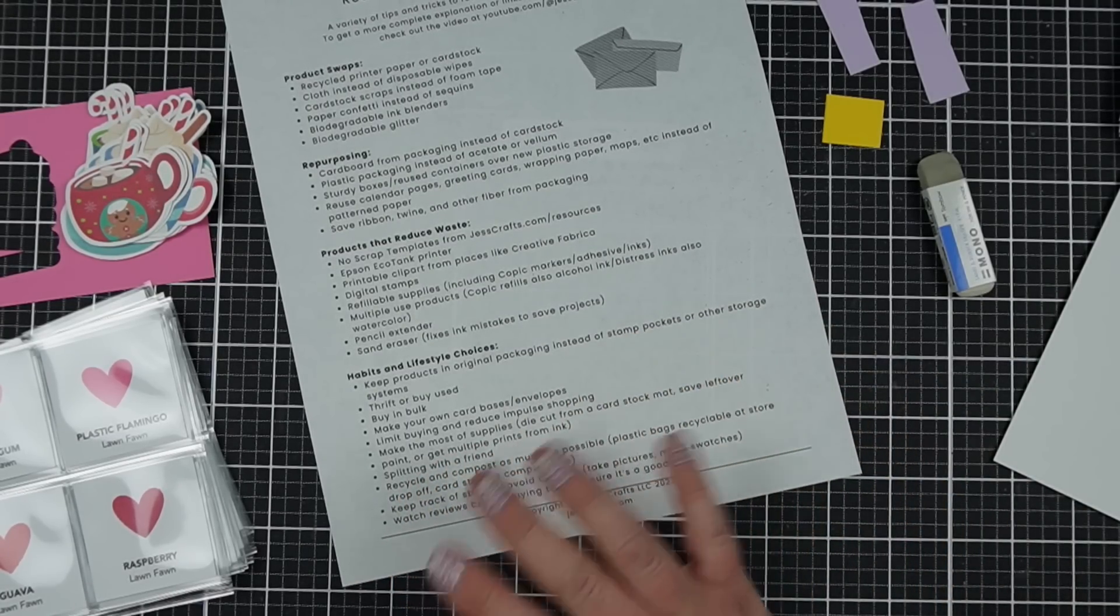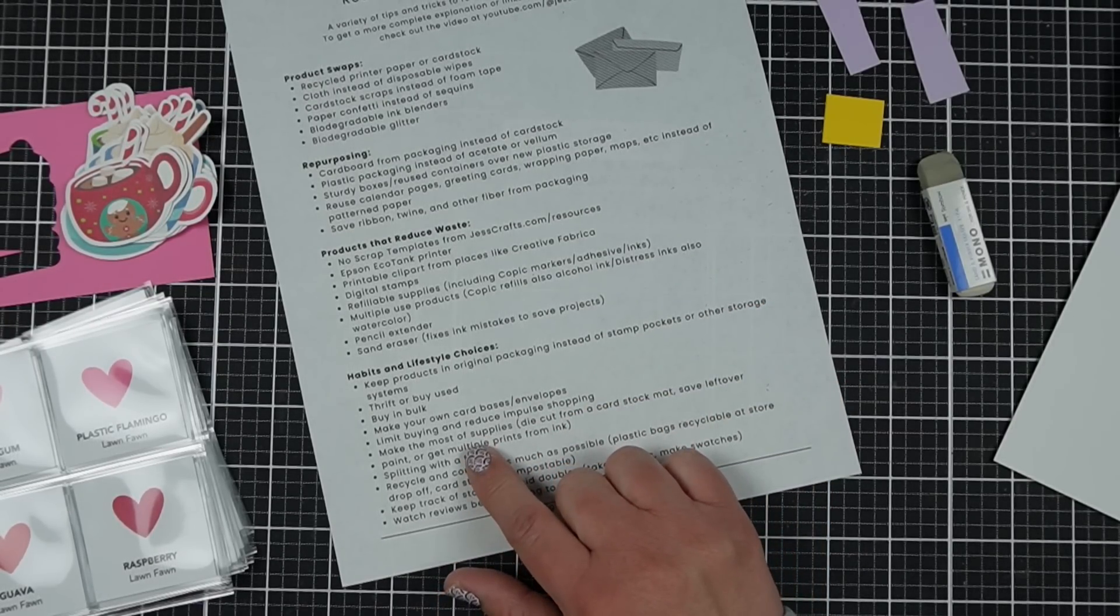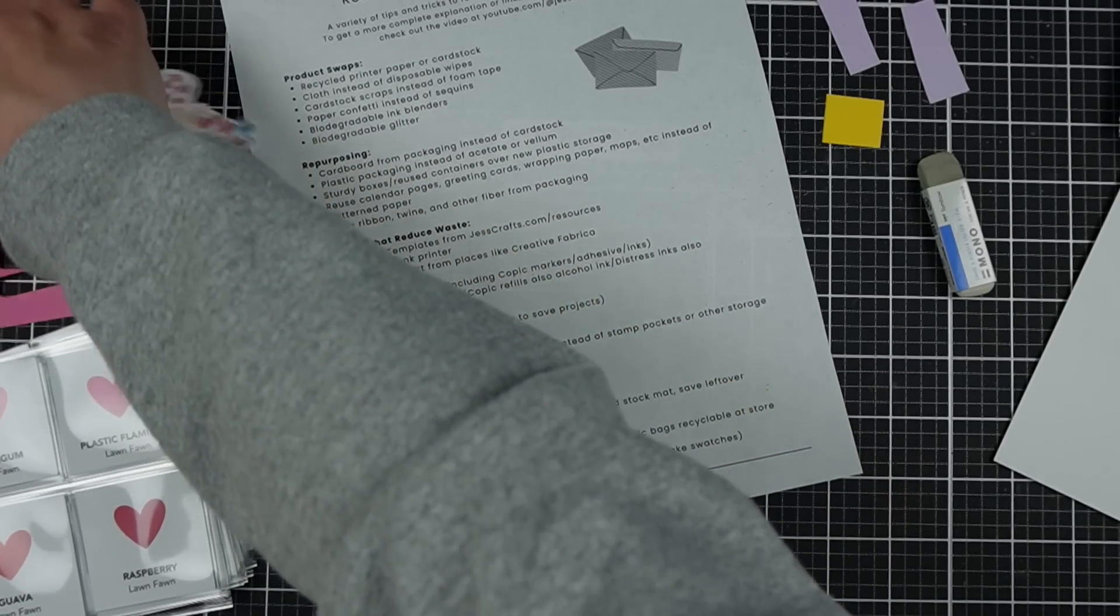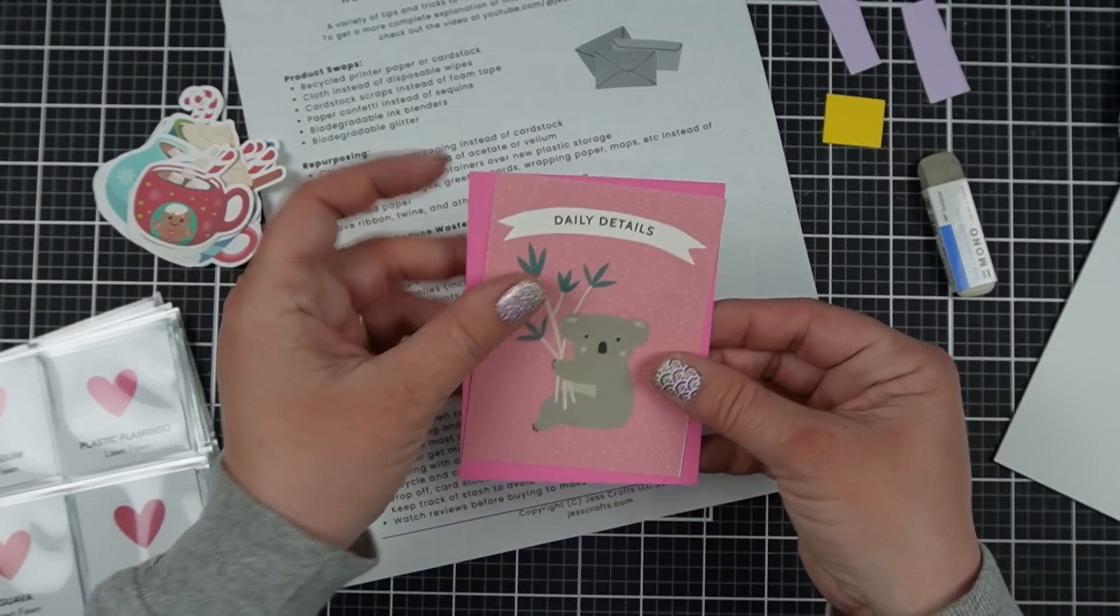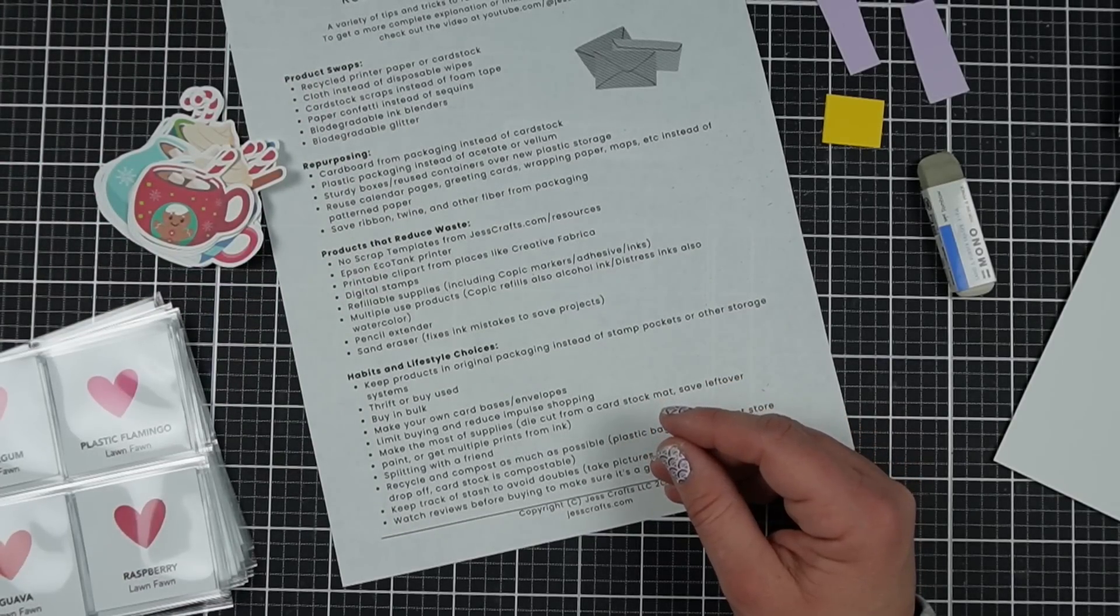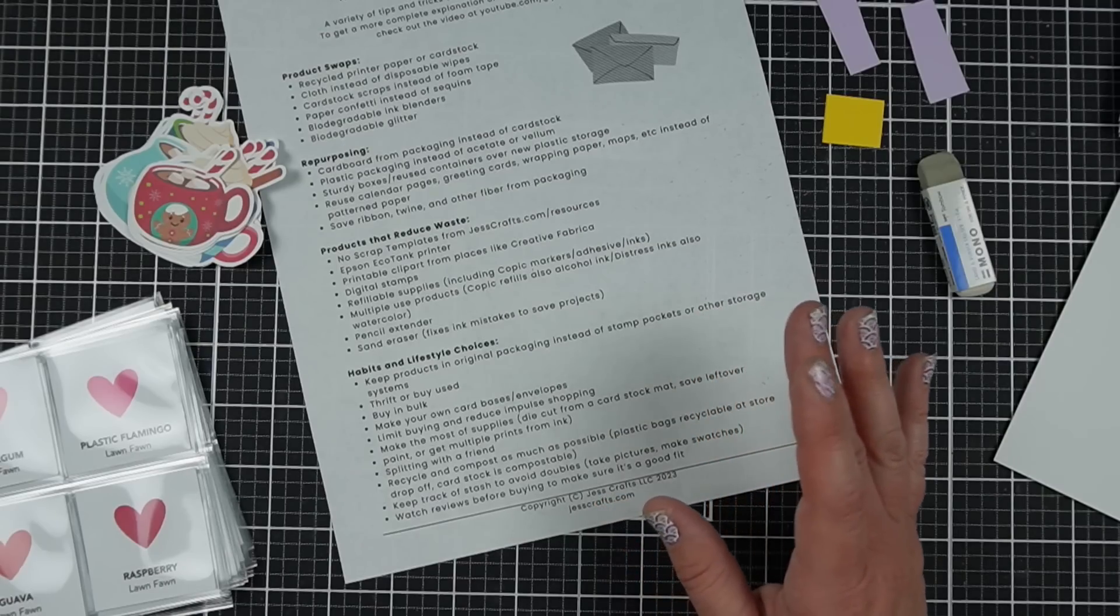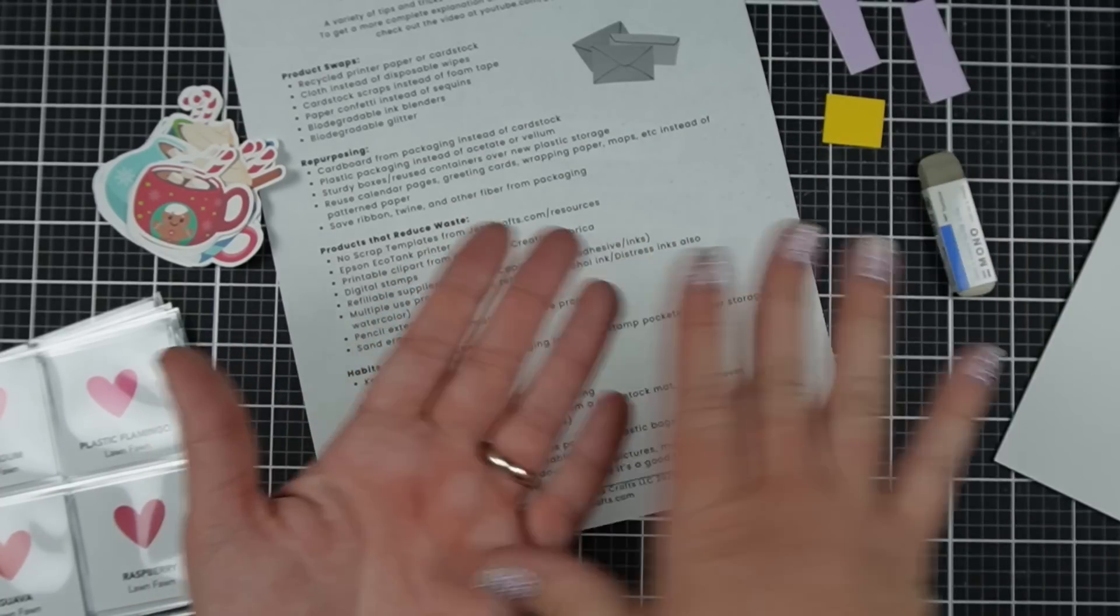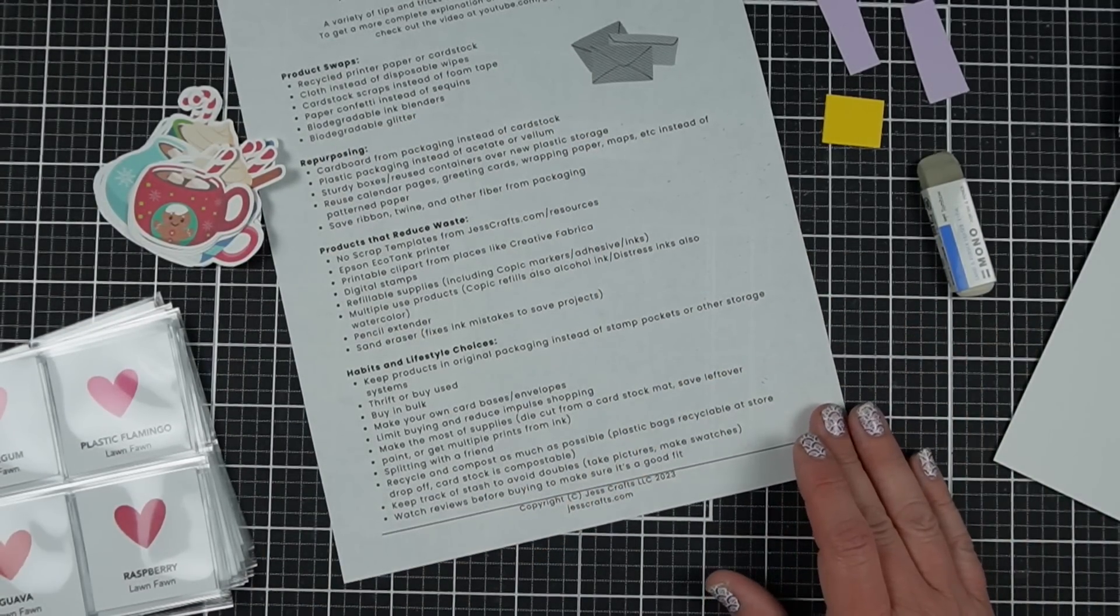Making the most of our supplies. Just a couple of suggestions. Please leave any additional suggestions you have about reducing waste in general, specifically about this one because I know everyone loves to make the most of their supplies. So if you have another tip, let us know. But I was thinking like when you die cut from the center of a piece, so like I have this and then I'm going to put a design on top of it, for instance, I've covered that hole anyway. And I recommend doing that pretty regularly. Saving leftover paint or getting multiple prints from a single use of ink.